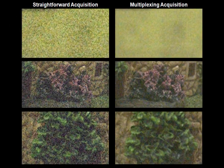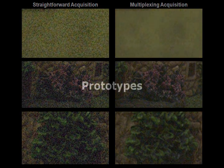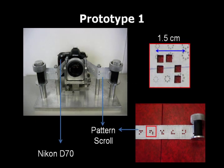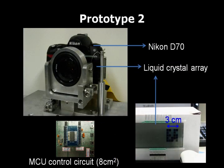We can see that demultiplexed images are much more clear and smooth. We implement two different prototypes of the programmable aperture camera. Both are easy and inexpensive to manufacture. We use a conventional Nikon D70 as the basic camera module and insert the designed programmable aperture into it. In the first prototype, the programmable aperture is implemented with a slit of opaque paper; the patterns are cut manually and selected by rolling the paper. The second prototype uses a liquid crystal array as the programmable aperture, providing two different angular resolutions: 5x5 and 7x7. The liquid crystal array is controlled by an MCU control circuit.